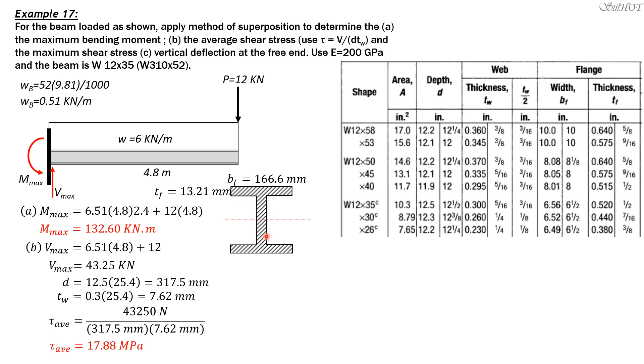The inner height is equal to depth 317.5 minus 2 times 13.21. Then divide that height by 2. The thickness or width is 7.62. Dividing by 2, this half of the inner height is 154.54. So the distance of the centroid of the flange from the neutral axis is 145.54 plus half of 13.21, which equals 152.14.